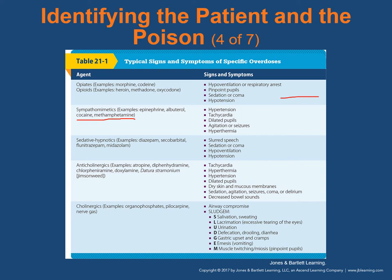In the cholinergics — drugs like the organophosphates, which have been used in pesticides, insecticides, and can be used in nerve gas — we use a common mnemonic called SLUDGEM. S stands for salivation or sweating — these patients will almost drown in their fluids. L is lacrimation (tearing of the eyes), U is urination, D is defecation, drooling, and diarrhea, G is gastric upset and cramps, E is emesis (vomiting), and M is muscle twitching.